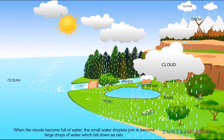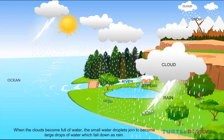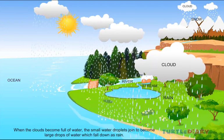When the clouds become full of water, the small water droplets join to become large drops of water which fall down as rain.